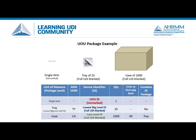Let's review an example of this concept as applied to an actual product. The item shown here is an allergist tray. Each tray contains 25 identical syringes. There are 40 trays in a case of this product, for a grand total of 1,000 syringes per case.